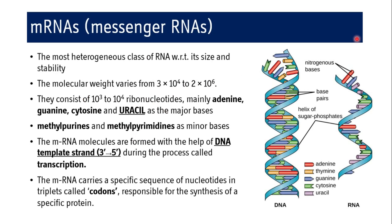Messenger RNA is one of the types of RNA, but it is the most heterogeneous class of RNA with respect to its size and stability. The molecular weight of messenger RNA varies from 3×10⁴ to 2×10⁶, so its variation is wide. mRNAs consist of 10³ to 10⁴ ribonucleotides — mainly adenine, guanine, cytosine, and uracil.